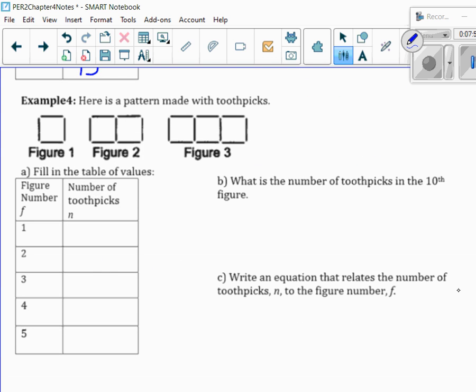Okay, next one. This time we have toothpicks. Figure 1 has 4 toothpicks. Figure 2 has 1, 2, 3, 4, 5, 6, 7. Figure 3 has 1, 2, 3, 4, 5, 6, 7, 8, 9, 10. And it looks like we're going up by 3 again. So, that means I can fill out the rest of my table.